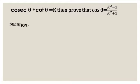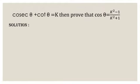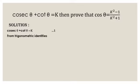Solution. Cosecant theta plus cot theta is equal to k. This is equation 1. From trigonometric identities, cosecant squared theta minus cot squared theta is equal to 1.